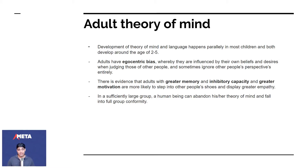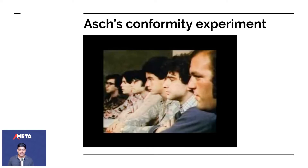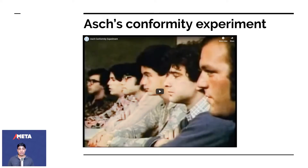In a sufficiently large group, a human being can abandon their theory of mind and fall into full-grown group conformity. As an individual exercising your individuality it's great, but the minute you fall into a group, you lose your theory of mind — you lose the ability to step into another person's shoes. You get into mob mentality. Here's an example of Asch's conformity test — I'm just going to play the video for you.